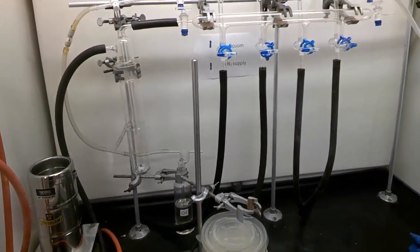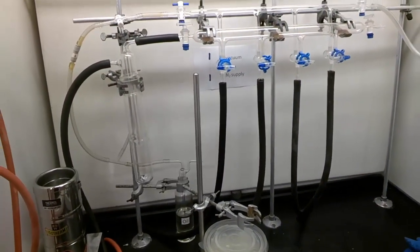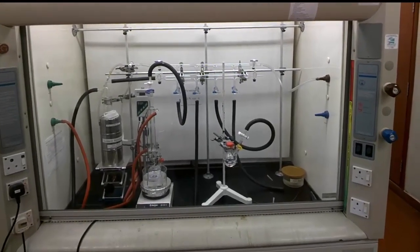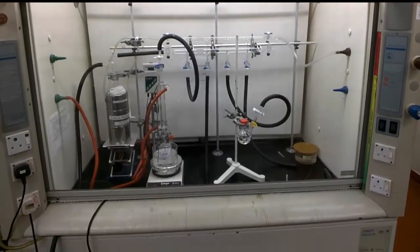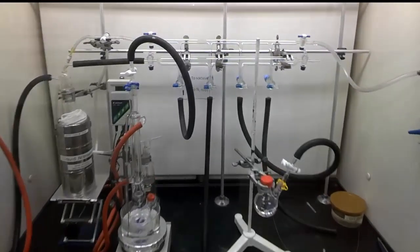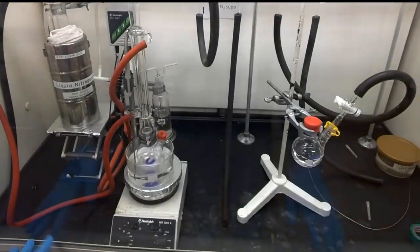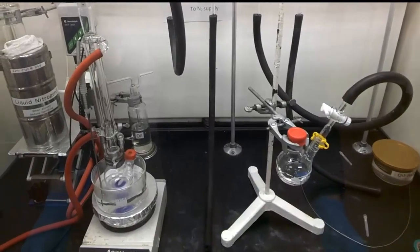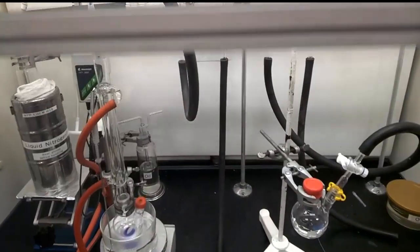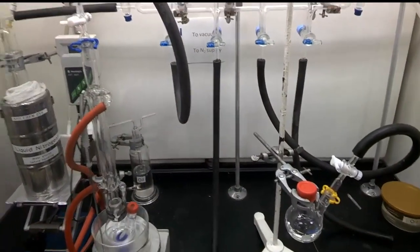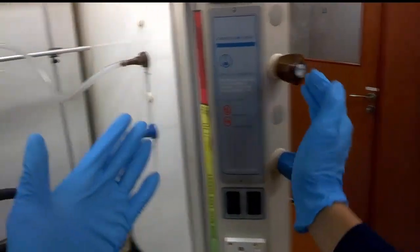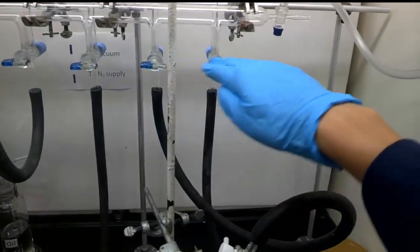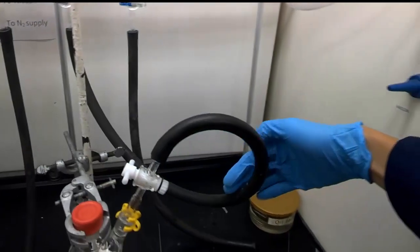So now you see this fume hood, the Schlenk line system is already set up for you. They're all in place. Now you notice that right now the sash is down, and it should always be down when you're conducting any experiments. But here, I'm going to leave it up so that you have a better view of the whole system when I'm going to show you what to do. Just for demonstration purpose, we are going to lift up the sash. Now you see that here is exactly what you saw just now in the fume hood previously. Just now it's already all set up for you. See that the glass joint stopcocks are placed horizontally.